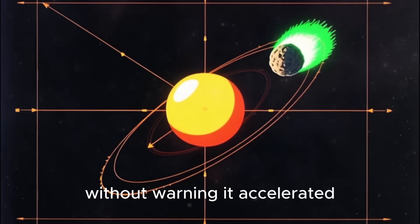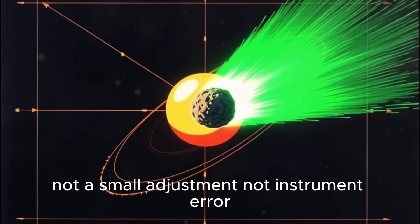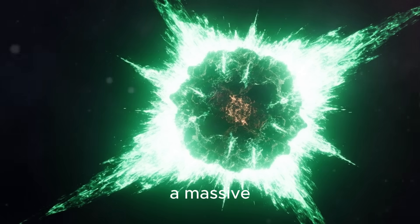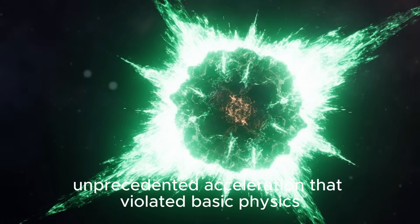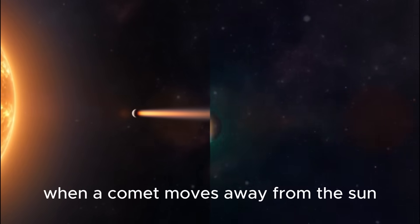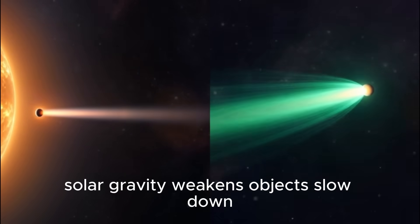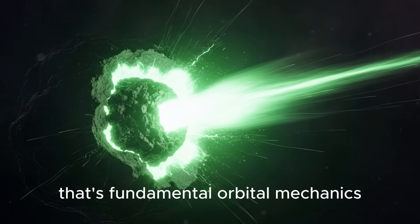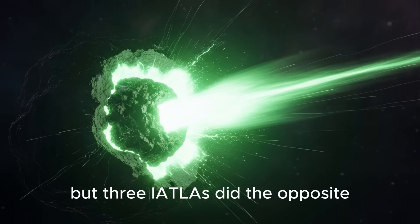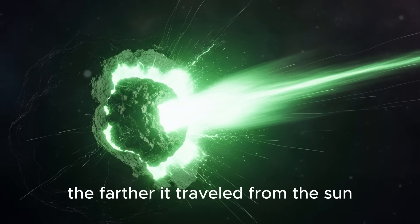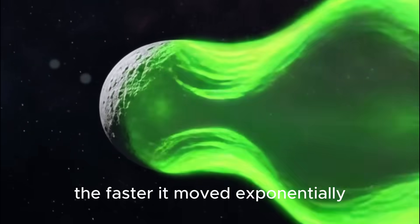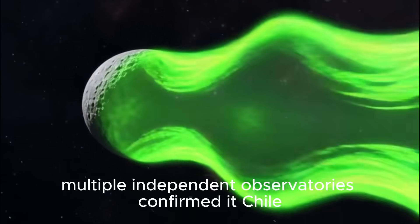Then without warning, it accelerated. Not a small adjustment, not instrument error - a massive, unprecedented acceleration that violated basic physics. When a comet moves away from the sun, solar gravity weakens and objects slow down. But 3I/ATLAS did the opposite. The farther it traveled from the sun, the faster it moved exponentially.